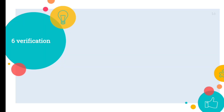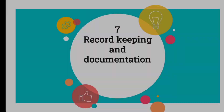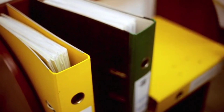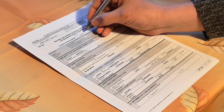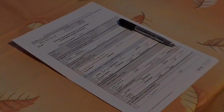The sixth step is Verification. Re-evaluate and revise the HACCP plan periodically to ensure its effectiveness. During this step, all records, documentation, and monitoring charts are reviewed and checked. They help you determine whether or not your plan successfully prevents, reduces, or removes food safety hazards. For example, you can review temperature monitoring charts after each shift to ensure that the critical limit for the chicken was met every time.